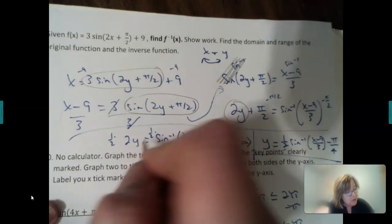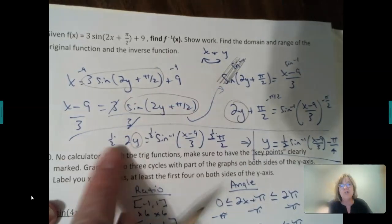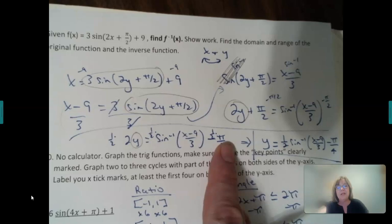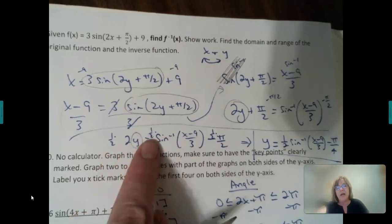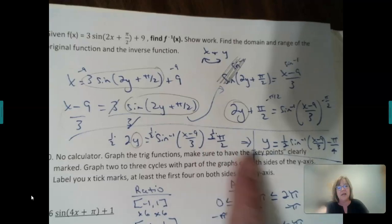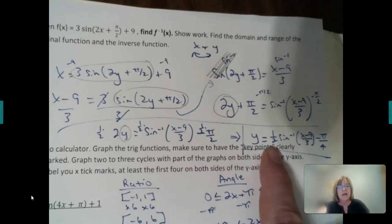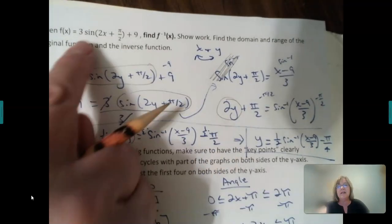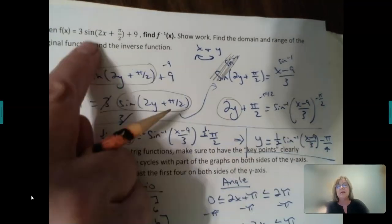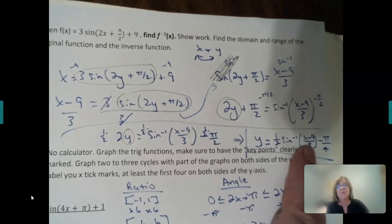Then to get rid of multiplying by 2 to isolate just this function, you do a half, you could divide by 2, but since I have fractions, I'm doing a half. So there's a half here, half on the outside. Notice all the ratio stuff, the adding 9, reverse minus 9, multiplying by 3, divide by 3.